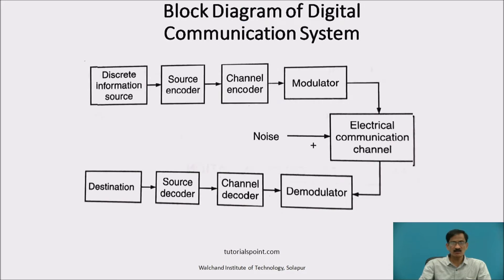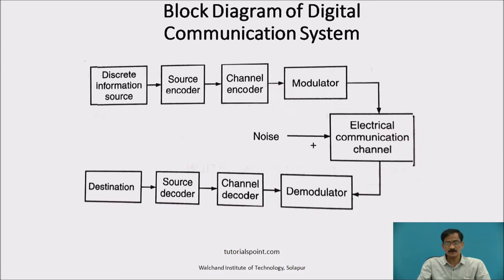This is the block diagram of a digital communication system, consisting of a discrete information source, source encoder, channel encoder, modulator, then electrical communication channel, demodulator at the receiver, channel decoder, source decoder, and a destination.